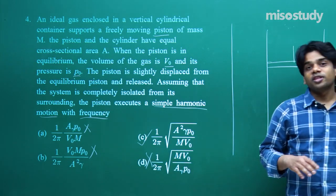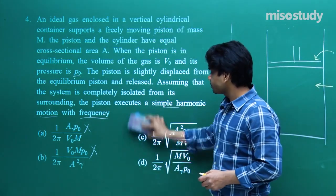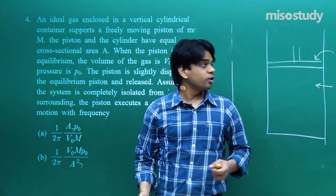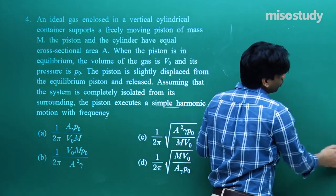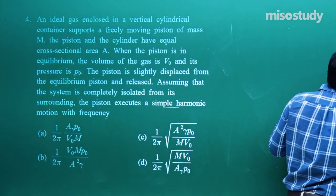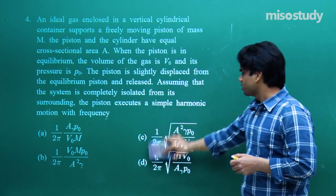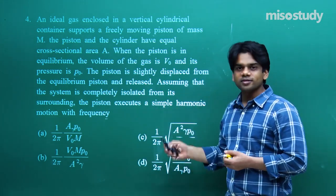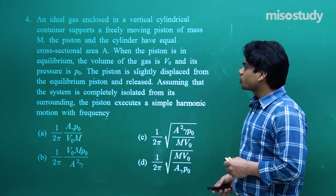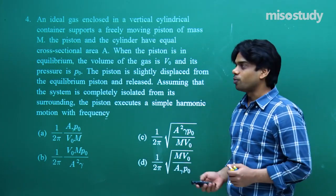This is a good question from a previous JEE examination. The key concept is knowing dp/dV = −γP0/V0 for an adiabatic process, which is derived from PV^γ = constant. The examiner tests whether you have learned the derivation of the adiabatic relation in detail.